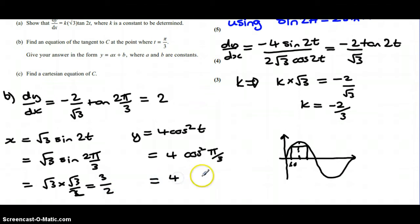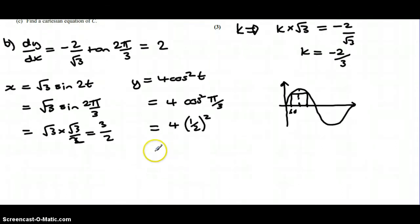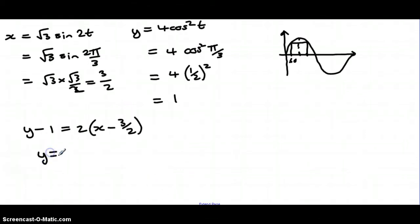And for this one, cos of pi over 3 is a half, and we're squaring it so you end up with y as 1. So if you put that into an equation of a straight line, then y minus the y coordinate is equal to the gradient times x minus the x coordinate, and that will end up with y equals 2x minus 2 as the equation of our tangent.